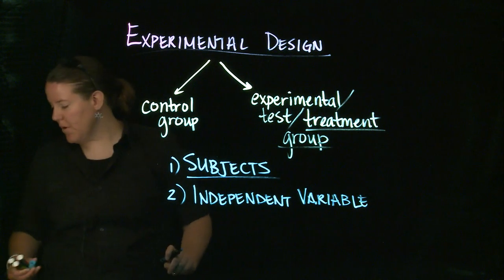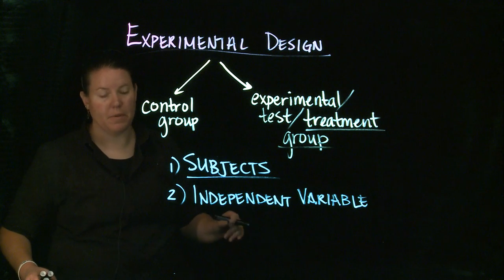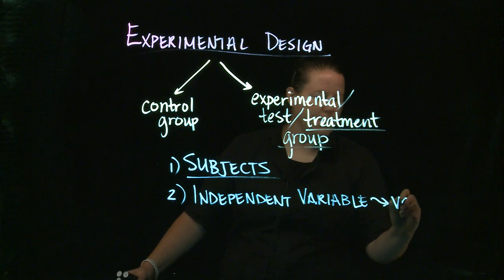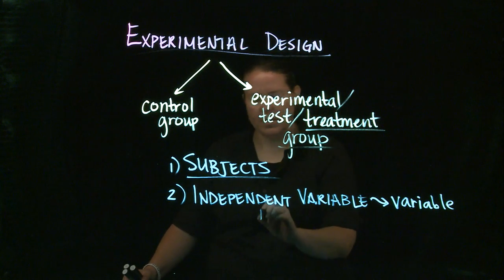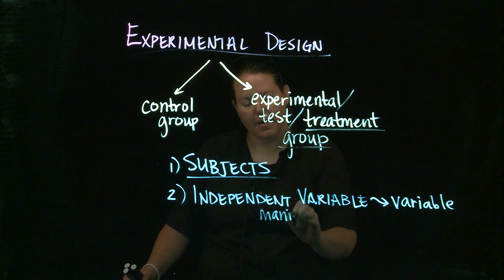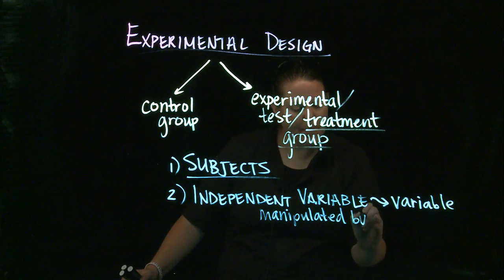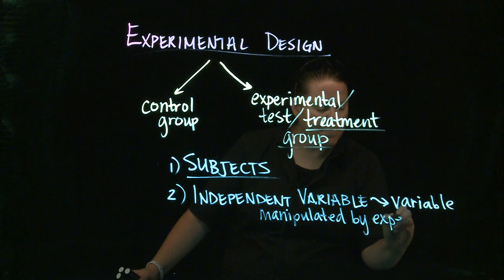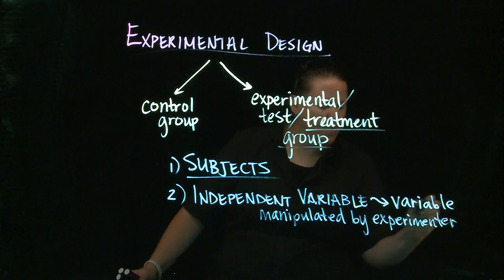The independent variable is this idea that this is the variable that's going to be manipulated. This is the variable that's going to be manipulated by the experimenter.